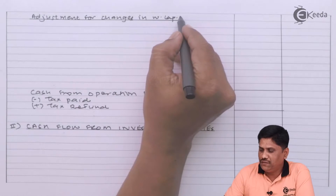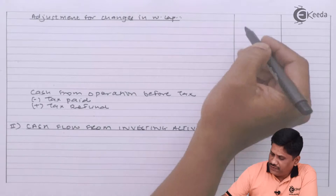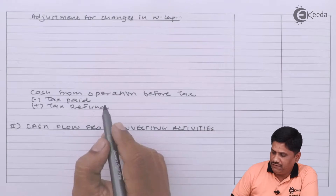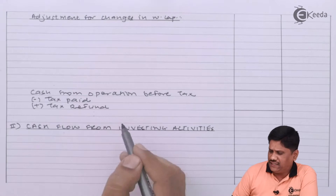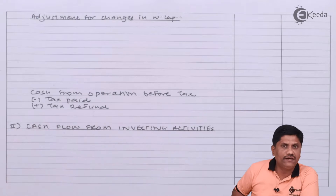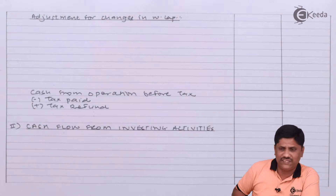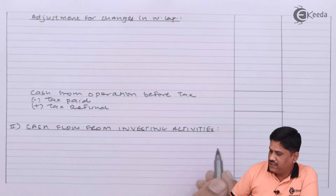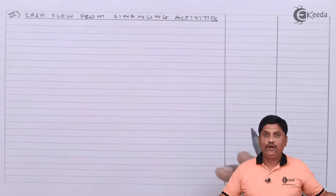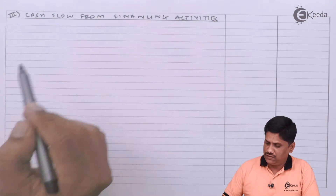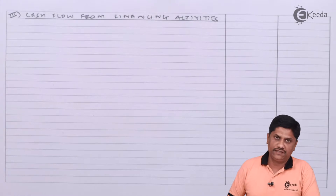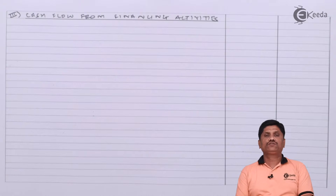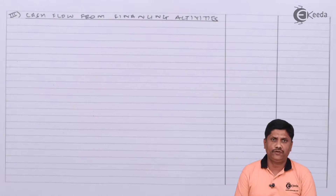After adjusting non-cash and non-operating items, what we get is the operating profit before changes in working capital. After applying changes in working capital, we get cash flow from operations before tax. From that, we minus tax paid (or add tax refund). Sufficient space is kept for investing activity (about 8 to 10 lines) and financing activity. Once ready with the format, placement of amounts becomes easy in the exam.